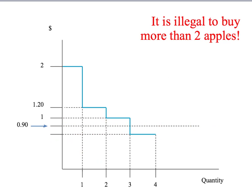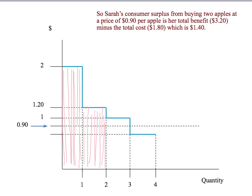To see how to use this rule, let's go back to our example of Sarah paying $0.90 per apple, but imagine there's a law that says it's illegal to buy more than two apples. At a price of $0.90 per apple, Sarah would like to buy three apples — she can't, she'll be arrested and sent to prison. So she will only buy the maximum of two apples. Sarah can only get consumer surplus on apples she actually buys and consumes. The pink area represents Sarah's total value from buying two apples — the area under her demand or marginal value curve up to the quantity of two apples — which is $2.00 plus $1.20, or $3.20.